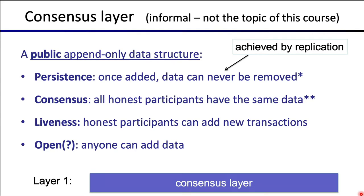The fourth property is openness, which says that anyone can add data — it's not just registered and authorized participants that can write data. Some chains are open, like the Bitcoin and Ethereum networks, where anyone can write data and anyone can mine and create blocks. Some other networks are not as open, and in fact there's a whole spectrum of openness.